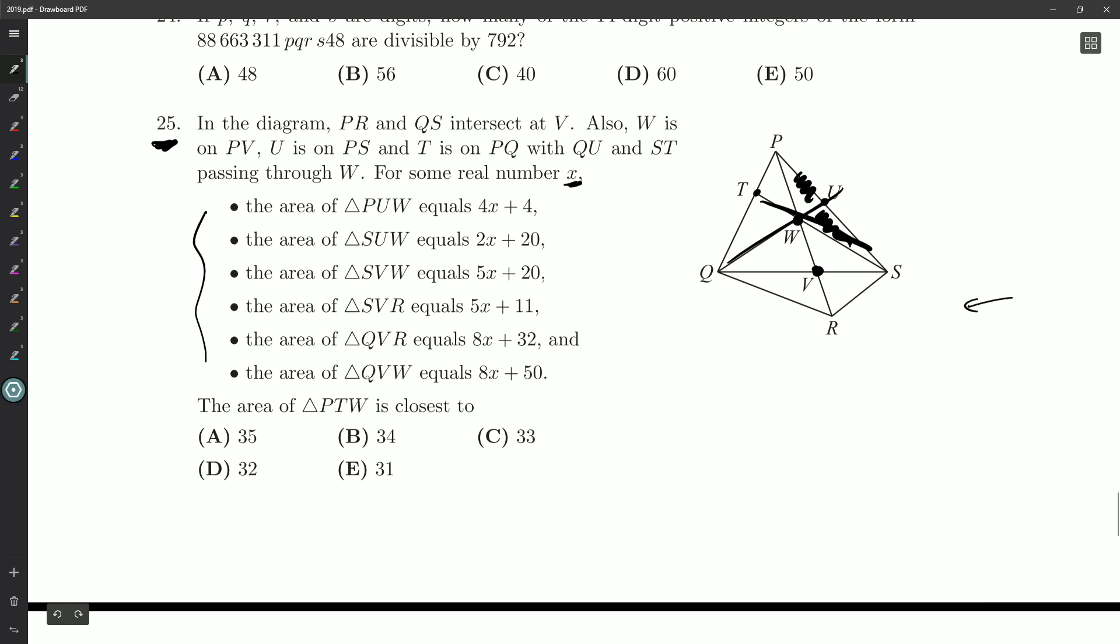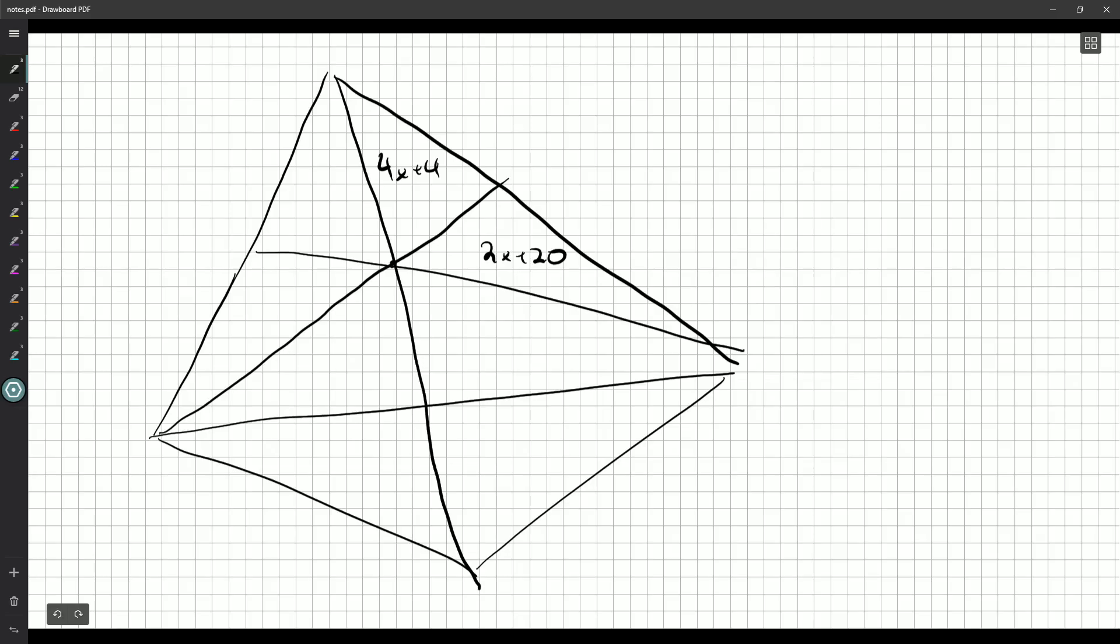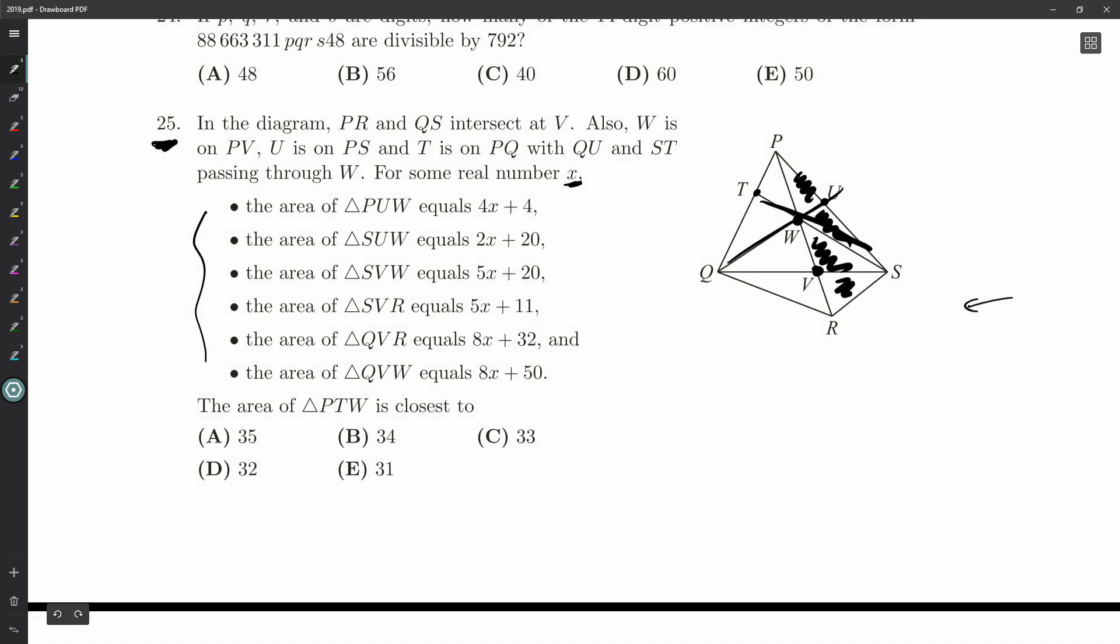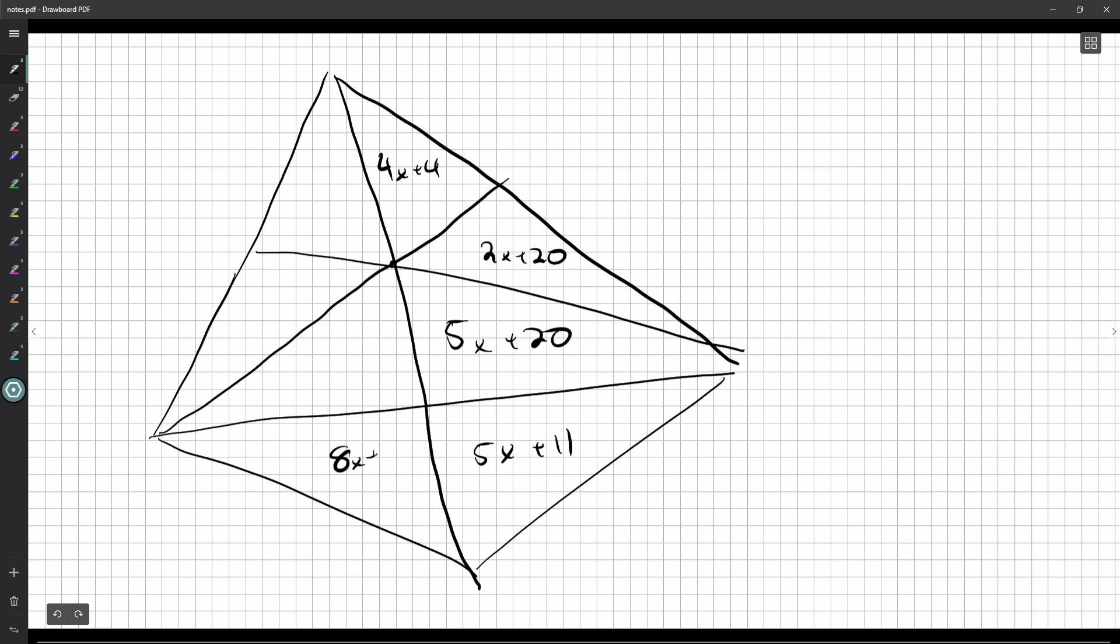All right, and then SVW is 5X plus 20. SVR is 5X plus 11, so very similar in areas there. And then QVR is 8X plus 32, QVW is 8X plus 50.